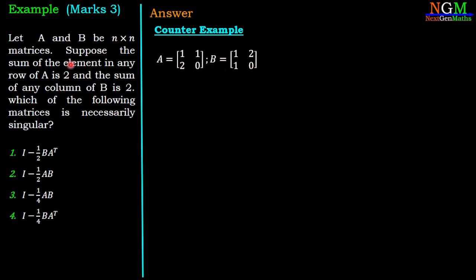The condition for A is given in the data: sum of elements of any row of A is 2. Matrix A has first row [1, 1] with sum 2, and second row [2, 0] with sum also 2, so it satisfies this condition. For matrix B, the condition is sum of any column is 2. First column of B is [1, 1] with sum 2, and second column is [2, 0] with sum also 2, so B also satisfies the condition.